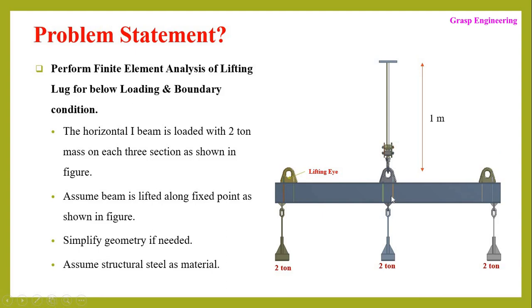We need to follow some loading and boundary conditions. The horizontal eye beam is loaded with a two-ton mass on each of the three sections as shown in the figure. This horizontal eye-section beam is attached to these two-ton masses, and we will replicate this with the help of point mass — that is two tons on each of the lifting eyes.